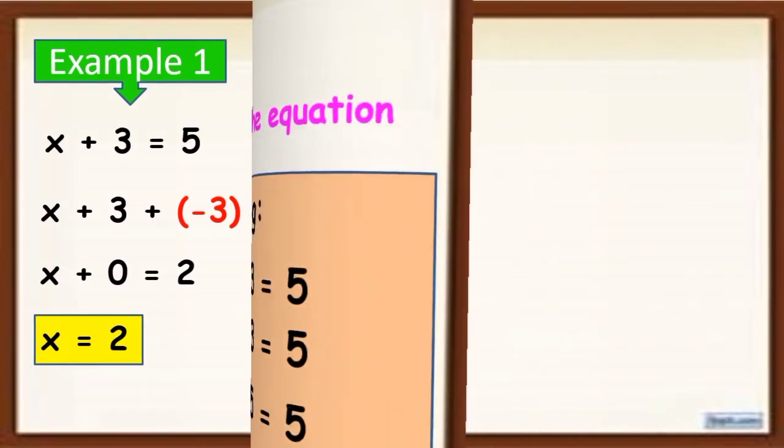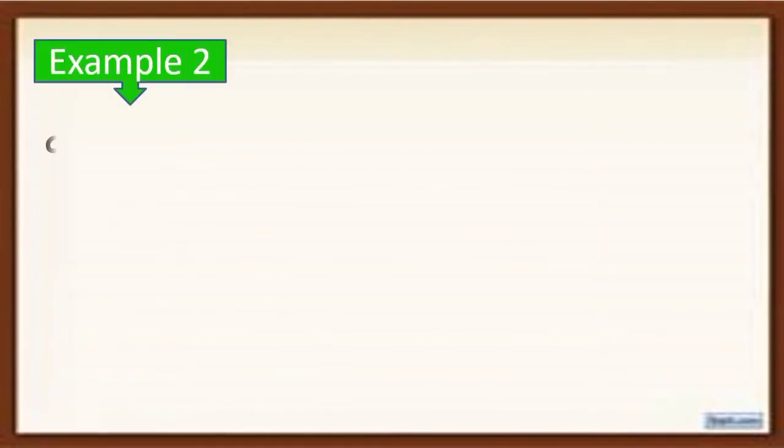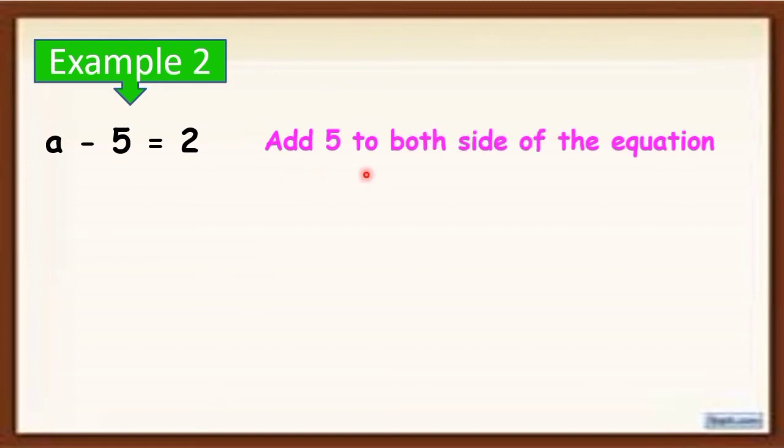Next, example number 2. A minus 5 is equal to 2. So we need to apply APE to isolate A. So we add 5 to both sides of the equation.